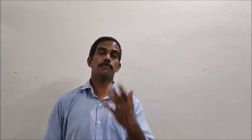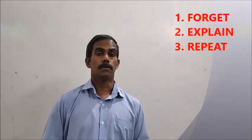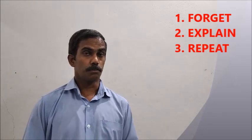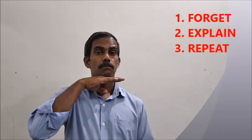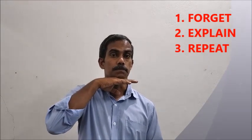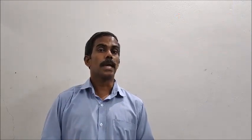Now look at the following words: forget, explain, repeat. Each of these has two syllables. These are verbs. For a verb having two syllables, the stress will usually be on the second syllable. That is why the words are read: for-GET, ex-PLAIN, re-PEAT.